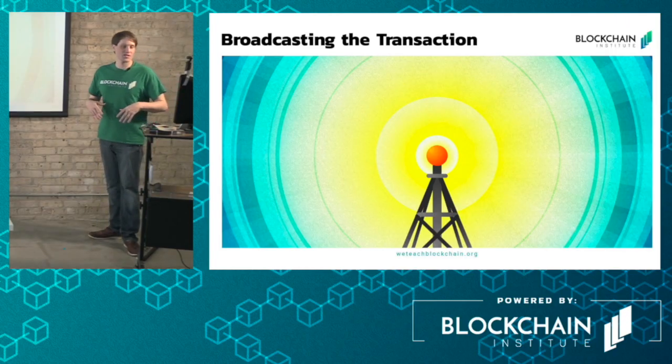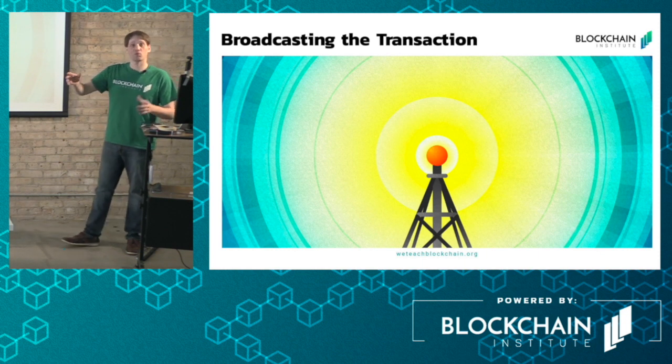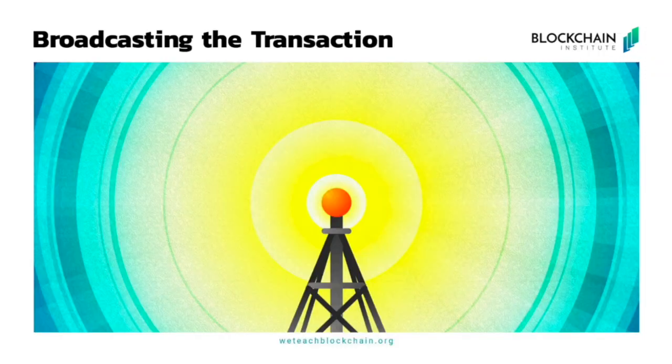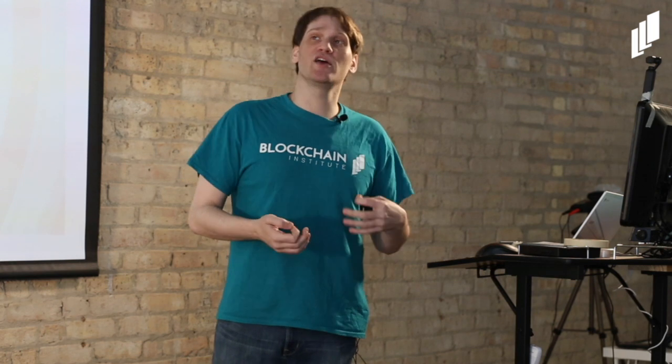The transaction is then broadcast to the network. The other members — egalitarian members, just anybody running the software on their computer — are alerted of this transaction. They instantly cross-check the transaction with their version of the history of all transactions on the blockchain in order to make sure the transaction can go through, that nobody is trying to spend the same Bitcoin twice or exceed their balance. The other nodes on the network are constantly cross-checking each other to make sure the rules of the network are being followed.